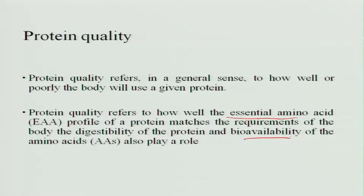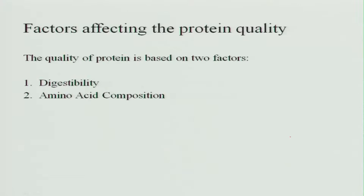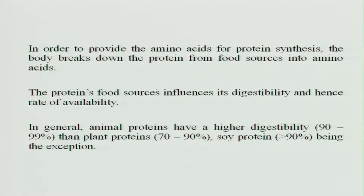This plays an important role in assessing protein quality. The factors that affect protein quality are two: one is digestibility and the other is amino acid composition. In order to provide amino acids for protein synthesis, the body breaks down protein from food sources into amino acids. The food source of the protein influences its digestibility and bioavailability.